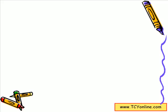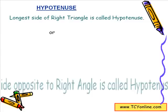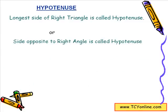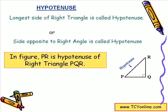Now let's look at one of the important terms of a right triangle — the hypotenuse. The hypotenuse is basically the longest side of a right triangle, or you can say it is the side opposite to the right angle. For example, in triangle PQR, which is right-angled at Q, PR is the hypotenuse because it is the side opposite to the right angle, and also the longest side of the triangle.